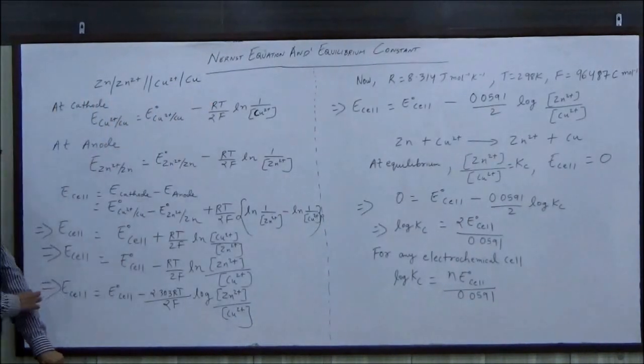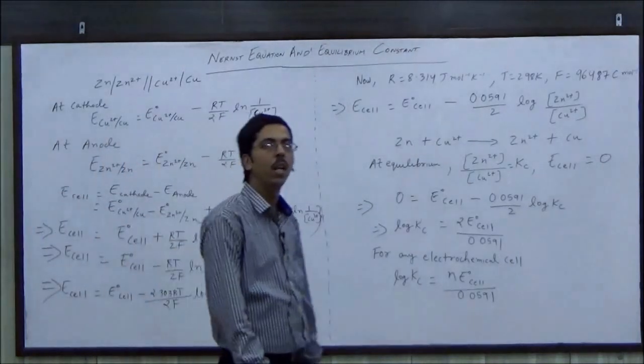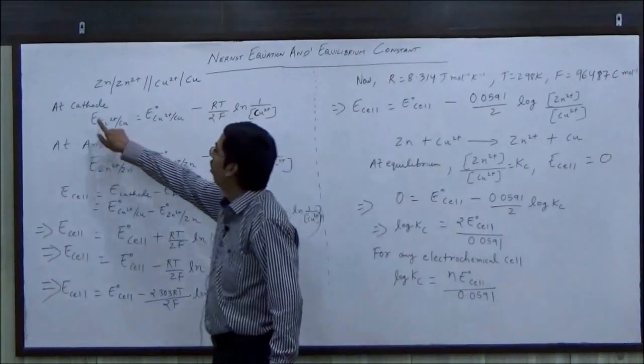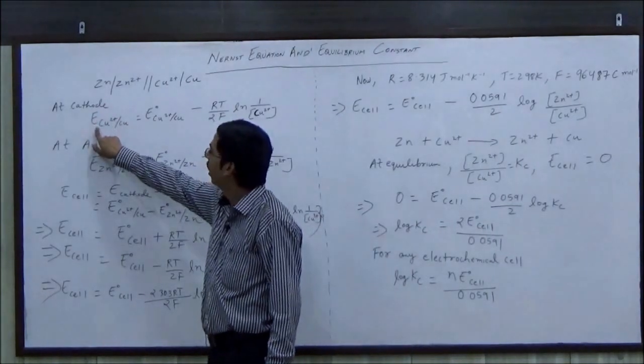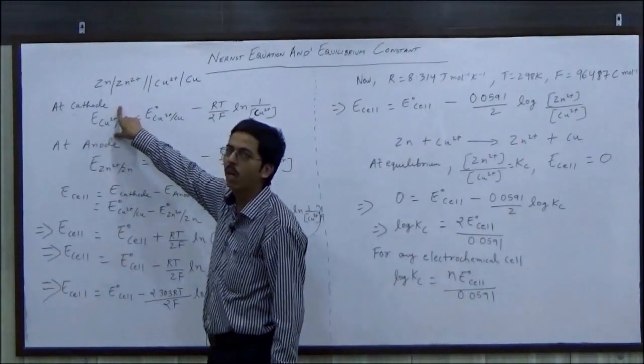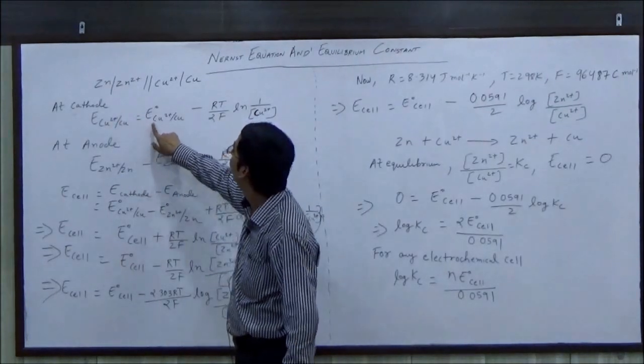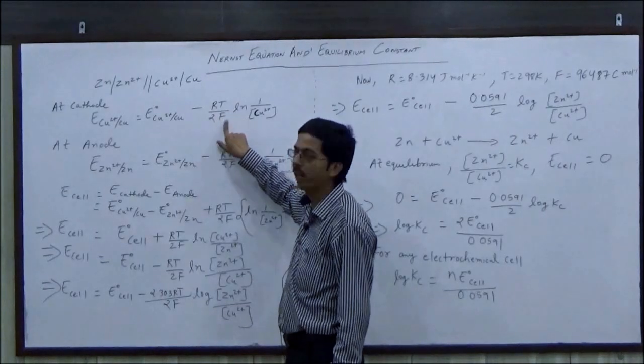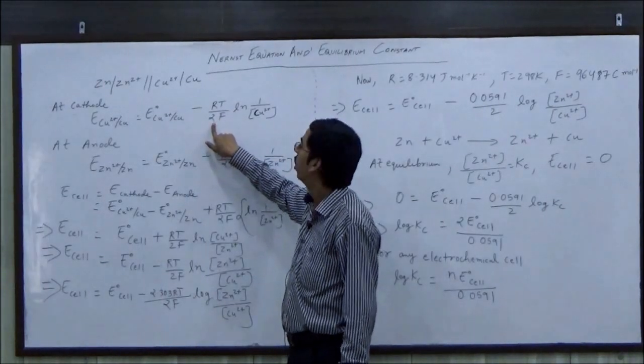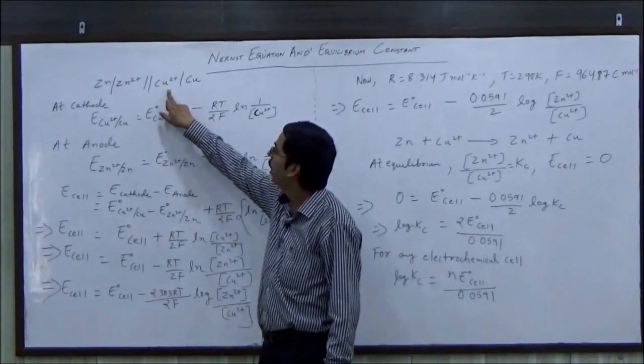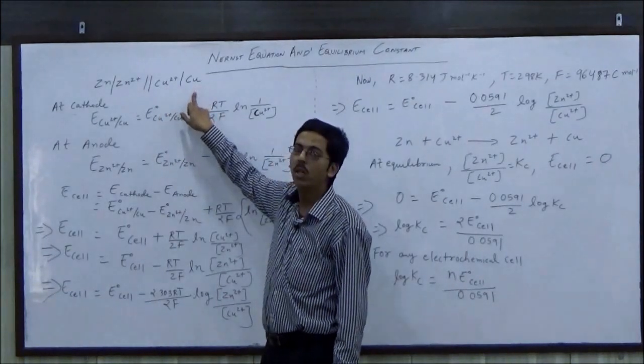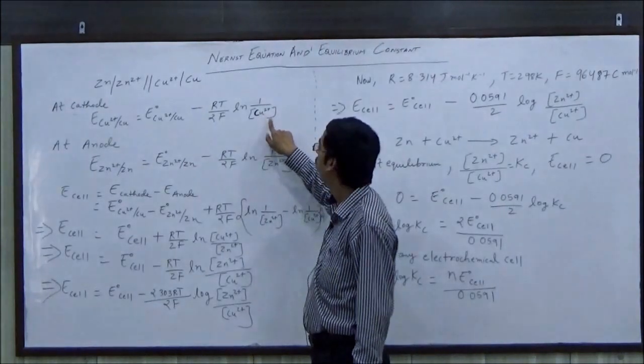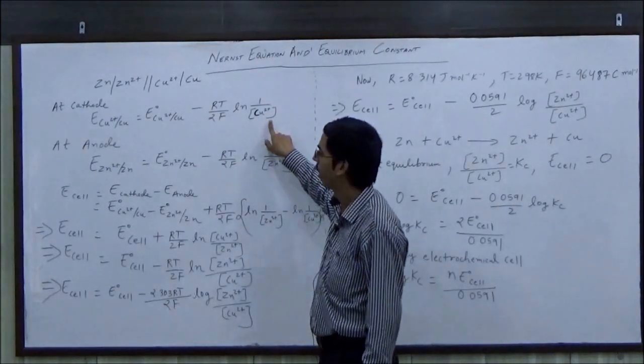Now we will calculate individual standard electrode reduction potential at different compartments. E Cu2+/Cu at cathode compartment is equal to E0 Cu2+/Cu minus RT by nF. Here n is equal to 2, because during the reduction of Cu2+ ion to copper, two electrons have been gained. ln 1 upon concentration of Cu2+ ion in cathode compartment.